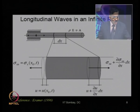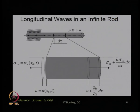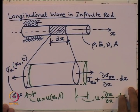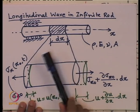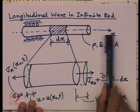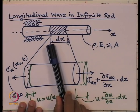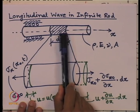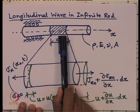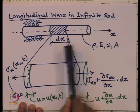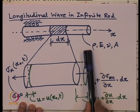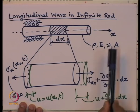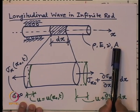In the previous lecture, we derived the longitudinal wave equation in an infinite rod. We took an infinite rod in the x direction only and considered an infinitesimal element of length dx. The material properties of the rod were given: density, Young's modulus, Poisson's ratio, and cross-sectional area.